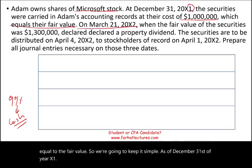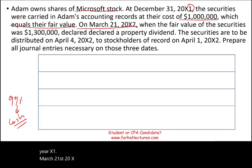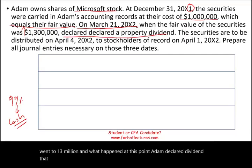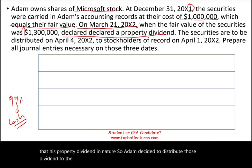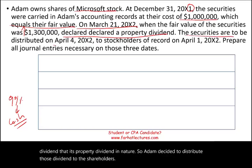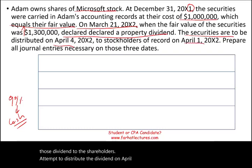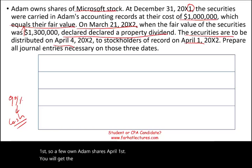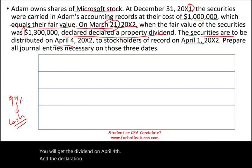On March 21st, 20X2, at the beginning of spring, the fair value of those securities went to $1.3 million. At this point, Adam declared a property dividend, deciding to distribute those securities to the shareholders. Adam will distribute the dividend on April 4th to stockholders of record on April 1st. The declaration date was March 21st.